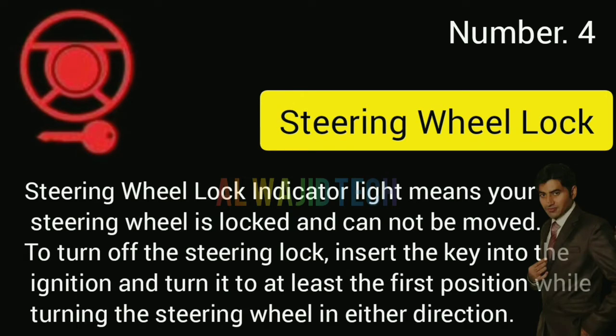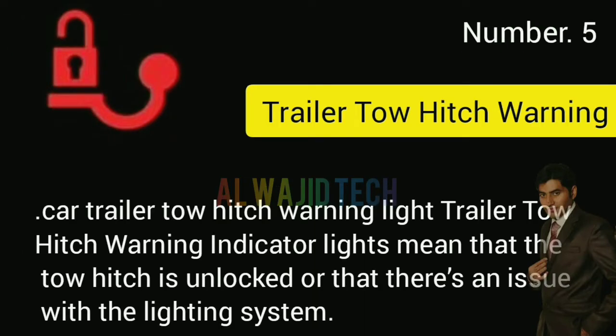Number four: Car steering wheel lock. The steering wheel lock indicator means your steering wheel is locked and cannot be moved. To turn off the steering lock, insert the key into the ignition and turn it to at least the first position while turning the steering wheel in either direction.